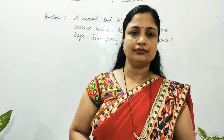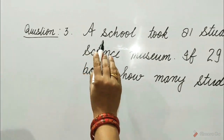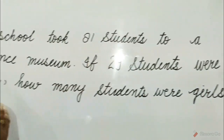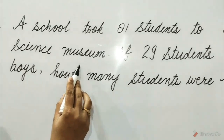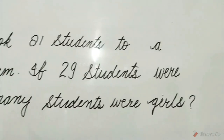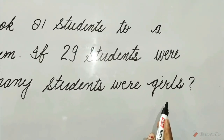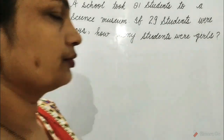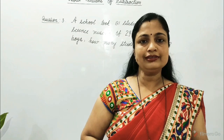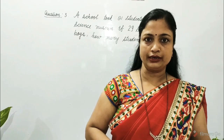Let's see question number 3. A school took 81 students to a science museum. If 29 students were boys, how many students were girls? To find the number of girl students, we will subtract the number of boy students from the total number of students.